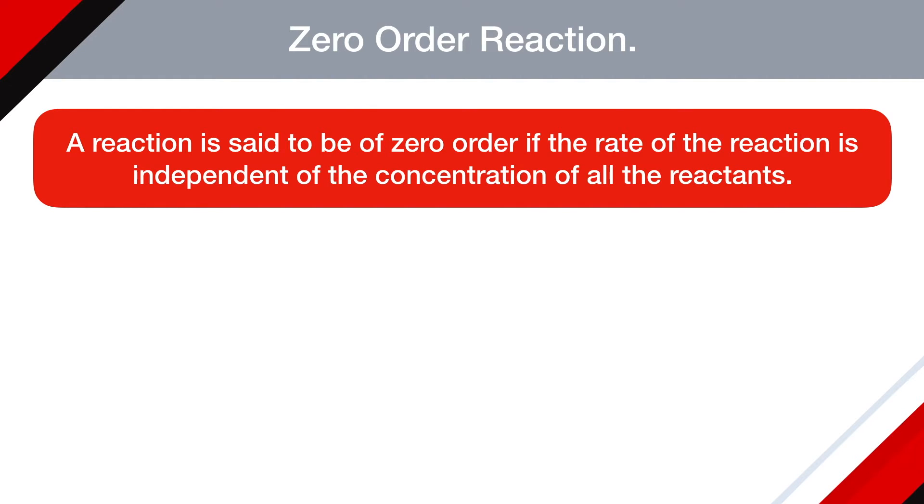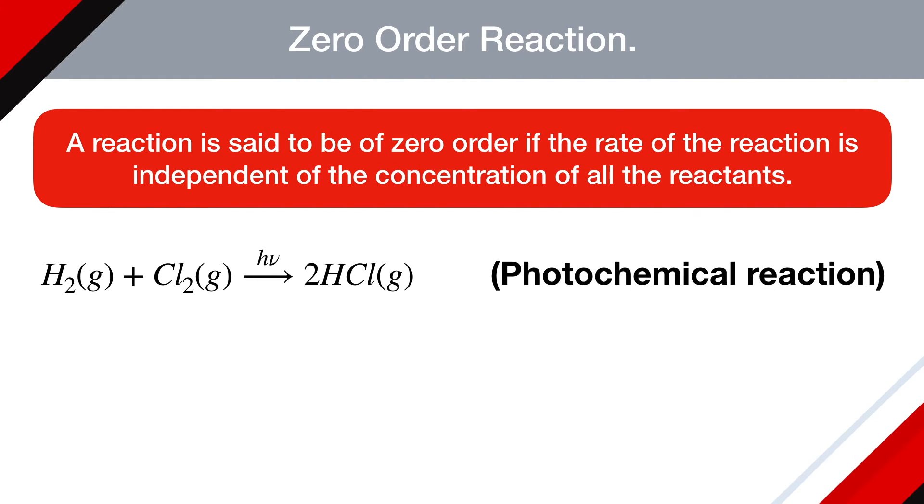For example, the combination between hydrogen and chlorine in presence of UV light. This reaction is photochemical and the rate of reaction does not depend on the concentration of hydrogen or chlorine. So it is independent of all the reactants and that's why it is known as zero order reaction.